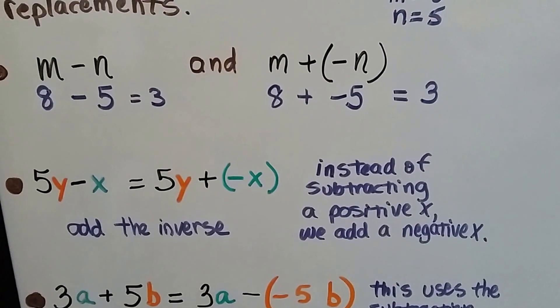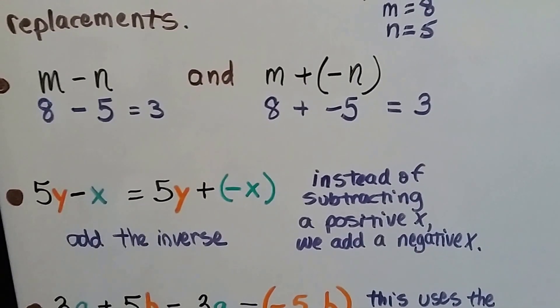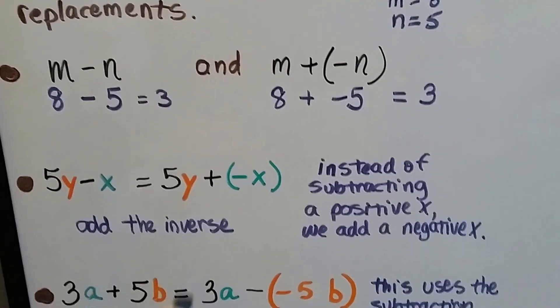For 5y minus x, it'll equal 5y plus a negative x. Instead of subtracting a positive x, we add a negative x. It's adding the inverse.